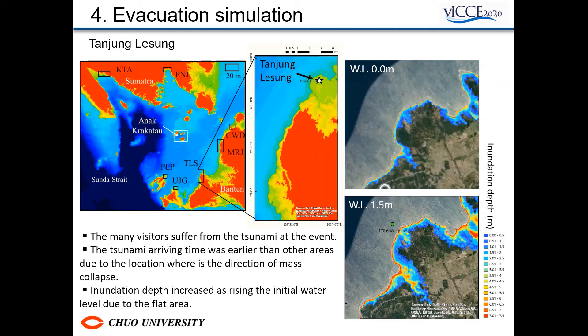Next, I will show the inundation area in the TLS for an initial water level of 1.5 meters. As a result of the simulation, it was revealed that the tsunami arrival time at Tanjung Resen was earlier than at other points. As shown in the right figures, you can see the increase in inundation area in the north area of TLS, where there is a low elevation area. Moreover, in the event, there were many visitors at the Tanjung Resen Resort, and many visitors were killed by the tsunami due to being unaware of it.